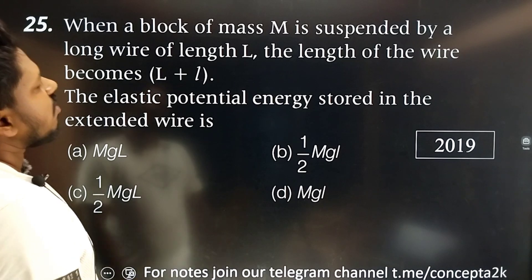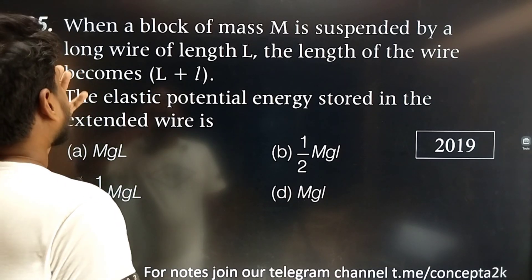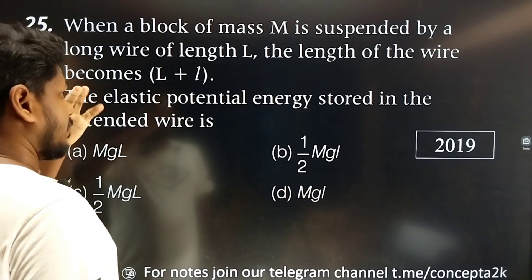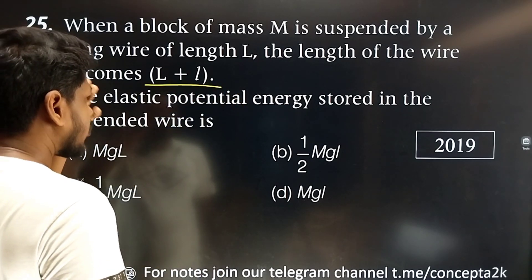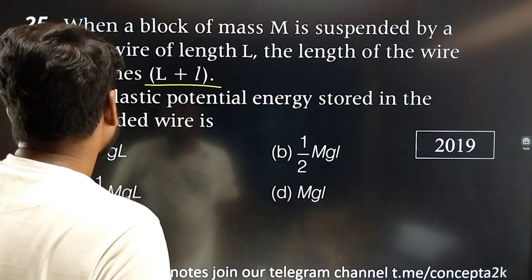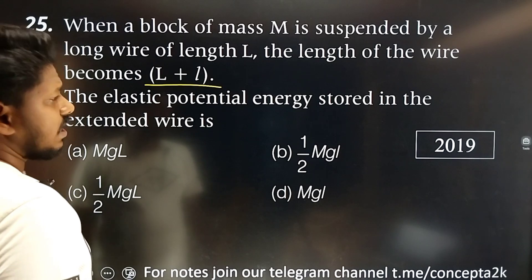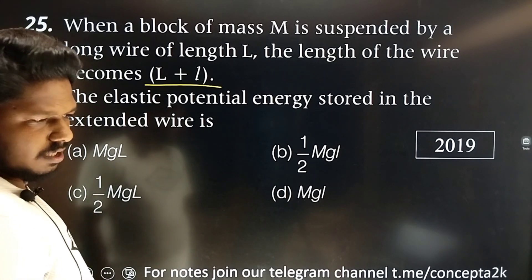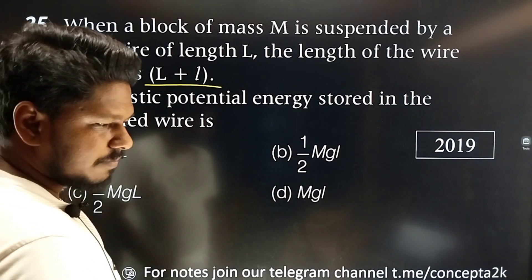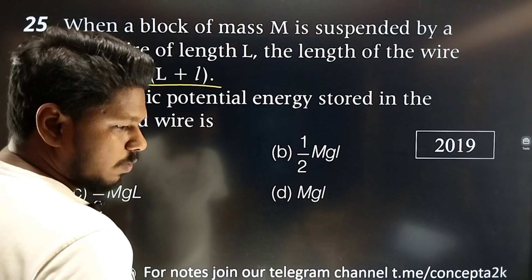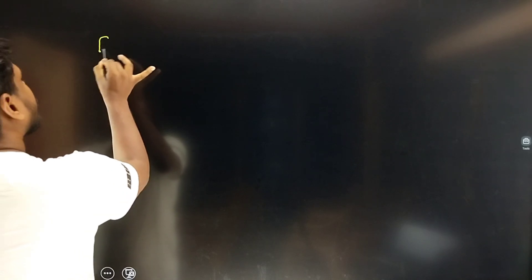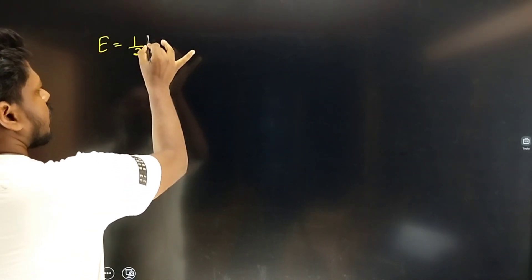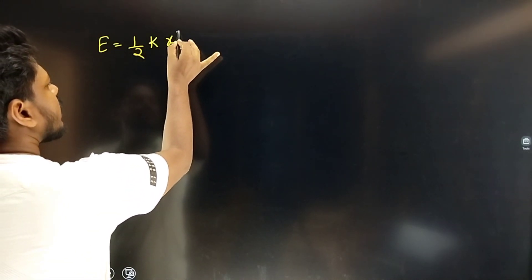The question is: when a block of mass M is suspended by a long wire of length L, the length of the wire becomes L plus delta L. The elastic potential energy stored in the extended wire is what we need to find. The formula is half into kx².